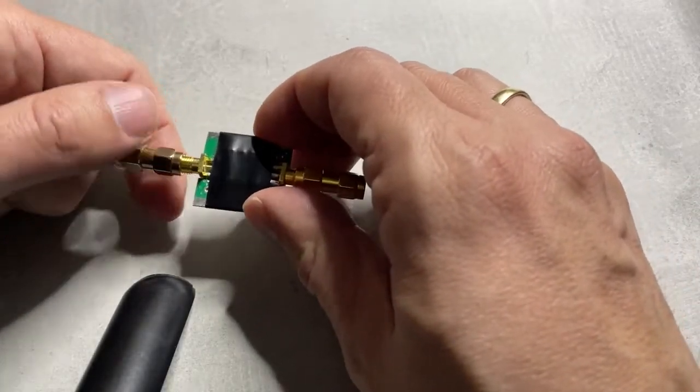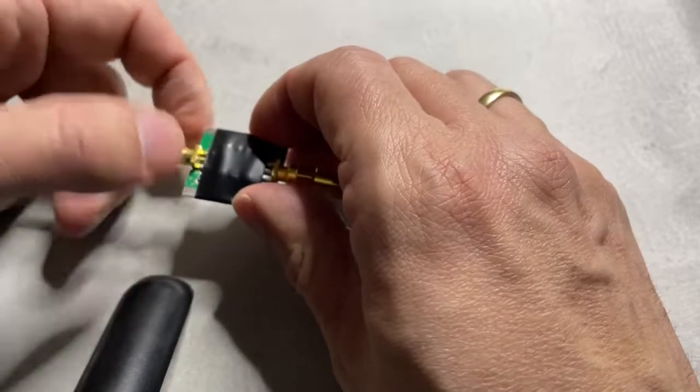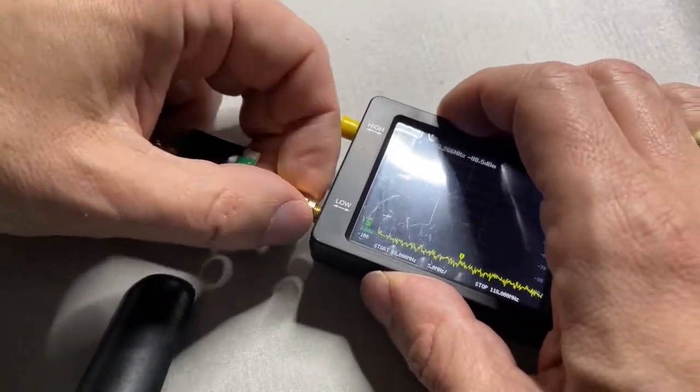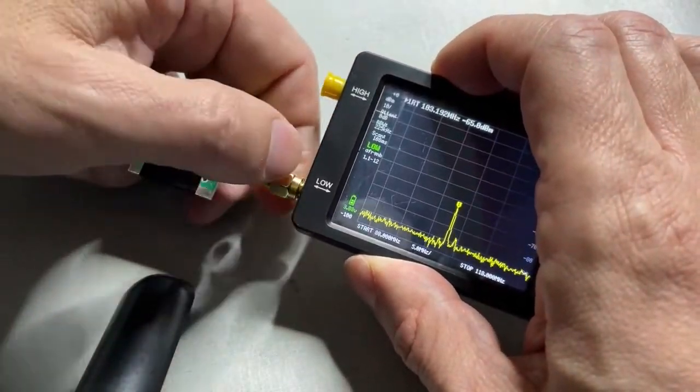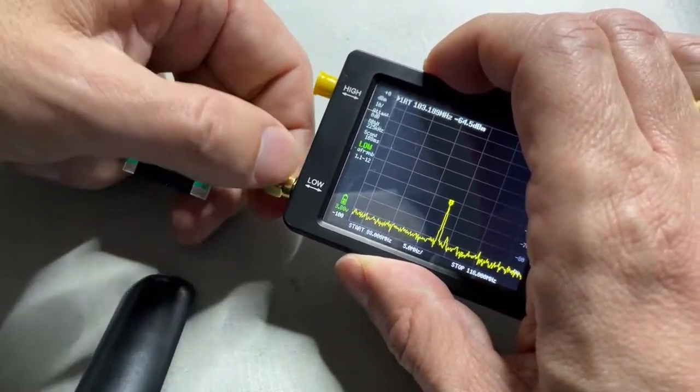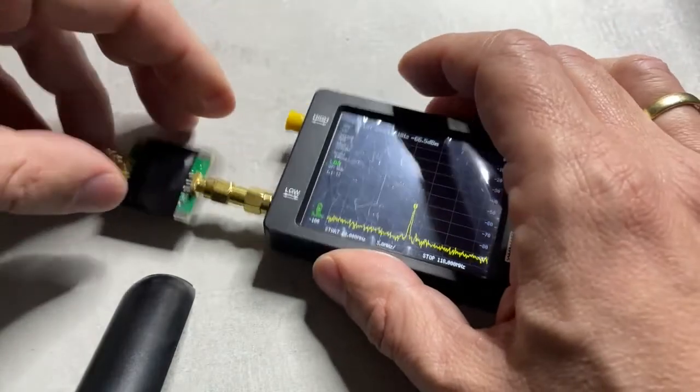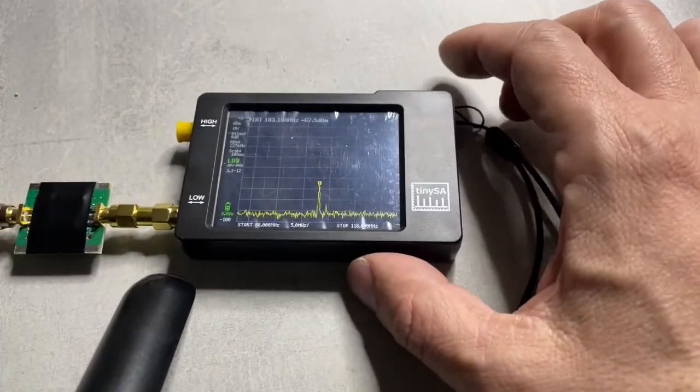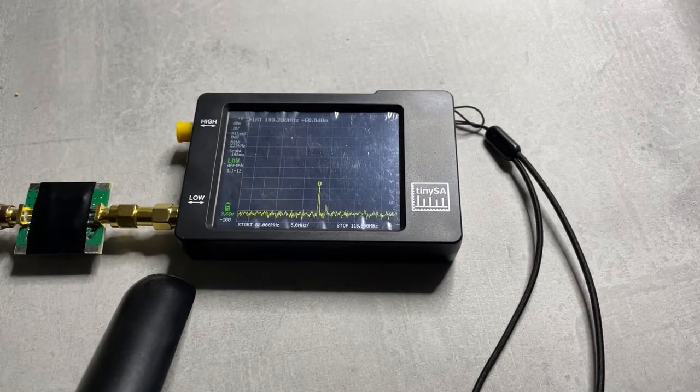That's why I decided to get an FM broadcast bandstop filter and let's see what it does to the situation. As we can see, it's a little disappointing. Most of the broadcast signals are completely gone, while the offending signal is still there.